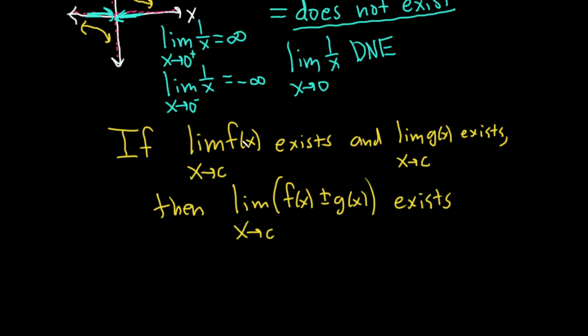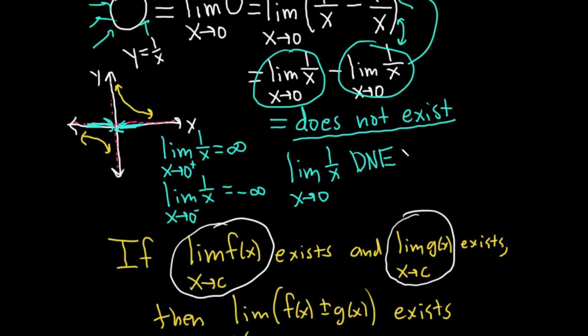So if the individual pieces exist, if the limit as x approaches c of f(x) exists and the limit of g(x) as x approaches c exists, then the sum and difference also exists. But that's not what we did here. We had two limits that did not exist and we went to something that exists, so you can't do that.